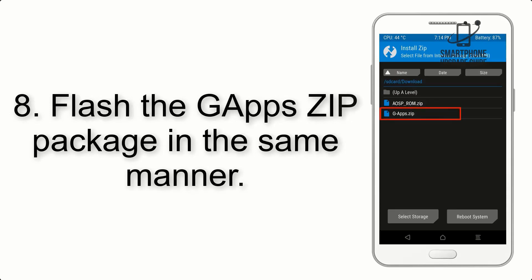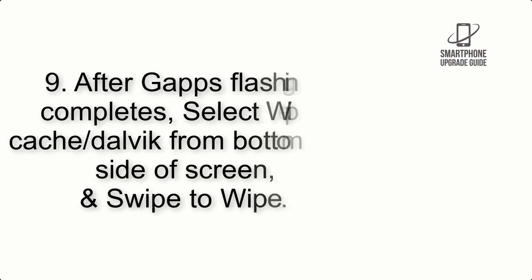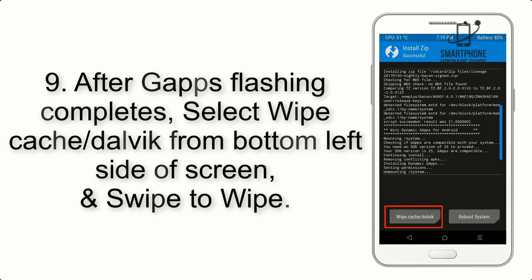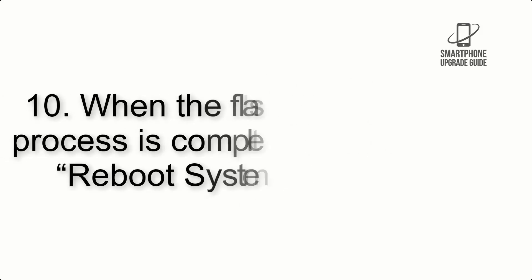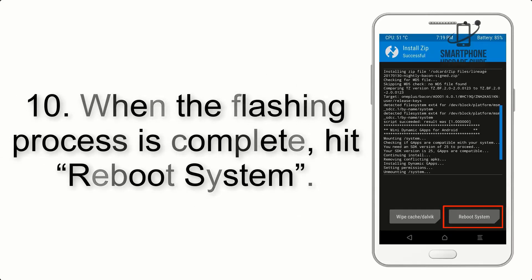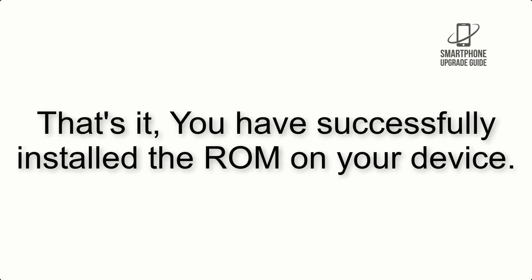Step 8: Flash the GApps zip package in the same manner. Step 9: After GApps flashing completes, select Wipe Cache and Dalvik from the bottom left side of the screen and swipe to wipe. Step 10: When the flashing process is complete, hit Reboot System. That's it — you have successfully installed the ROM on your device.